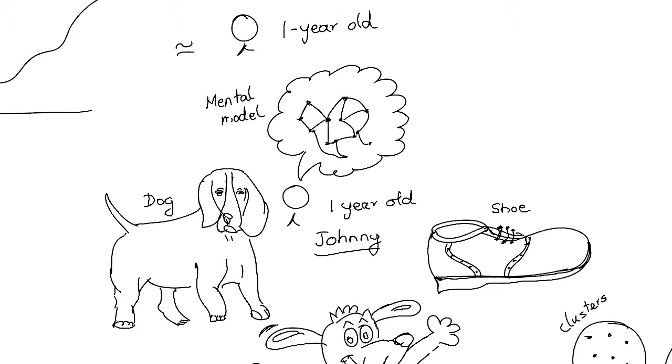Now back to Johnny. Is it possible that Johnny is able to recognize the dog in the same way? Perhaps there are different types of models for different types of cognitive activities.